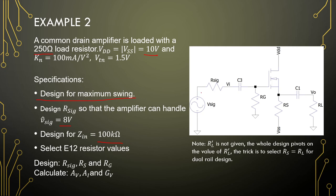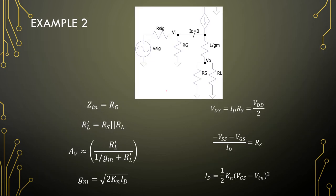For a dual-rail design: RG is your input impedance, so purely the choice of RG determines the input impedance. 1/GM in parallel with RS is the output impedance. R_load_prime is RS in parallel with the load. AV follows the same formula as before, but the DC biasing differs — VDD/2 targets our output, and VDS = ID·RS.